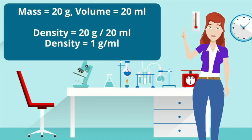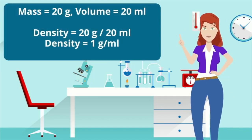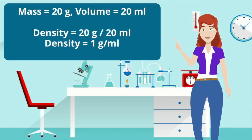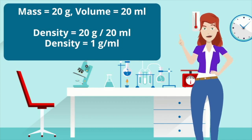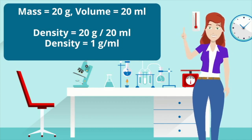What is the density of the liquid? The mass is 20 grams, the volume is 20 milliliters. The density equals 20 over 20, so the density is 1 gram per milliliter.